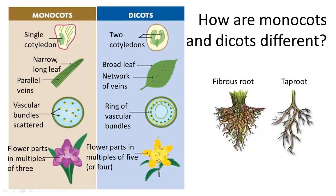It's not that important to recite these differences in detail, but be ready to recognize these differences when prompted. You should also note that monocots are generally grasses such as lawn grass, wheat, rice, and corn — they all have long narrow leaves.